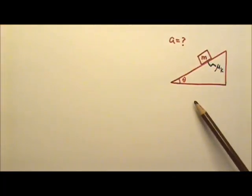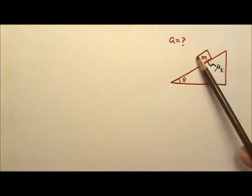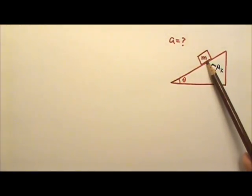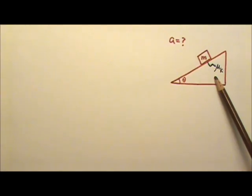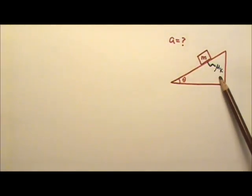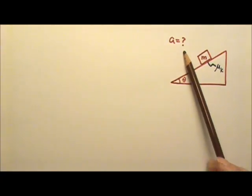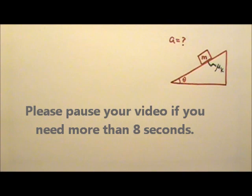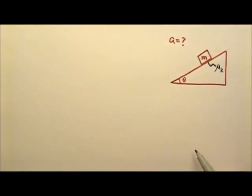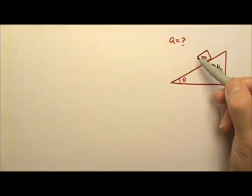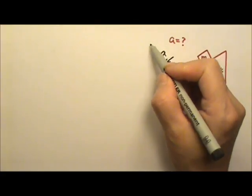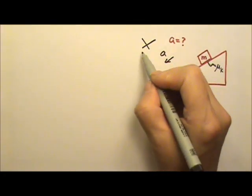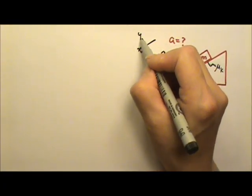Now let's look at an incline situation when there is friction. After released from rest, this box with mass m is sliding down the incline. The angle of the incline is theta, and the coefficient of kinetic friction between the box and the incline is mu_k. See if you can find the acceleration of the box. Let's follow the problem-solving procedures. The box is accelerating down the incline, and I'm going to use the slanted coordinate system, where the incline direction is x and the other is y.